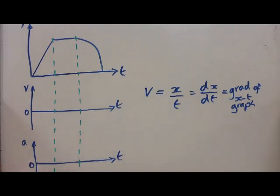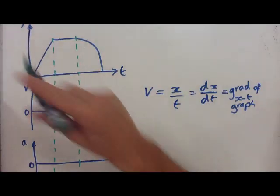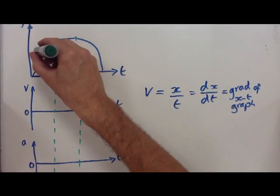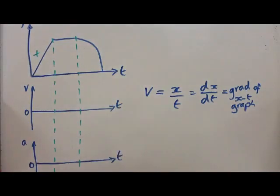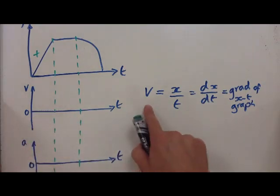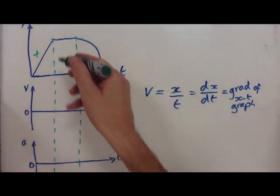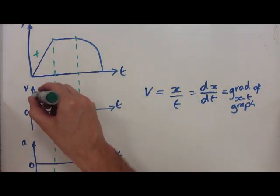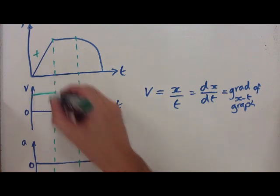Right, so what do we know? Well, let's consider the gradient. The gradient here, what is it? It's positive and it's constant. So I've said the velocity is the gradient. Well, if the gradient is positive and constant, velocity is positive, it's above zero and constant in that period there.